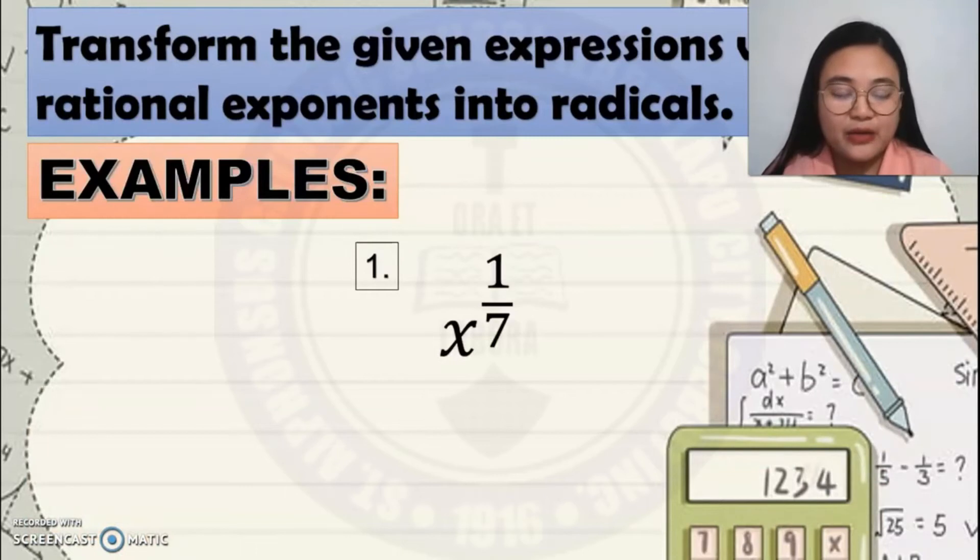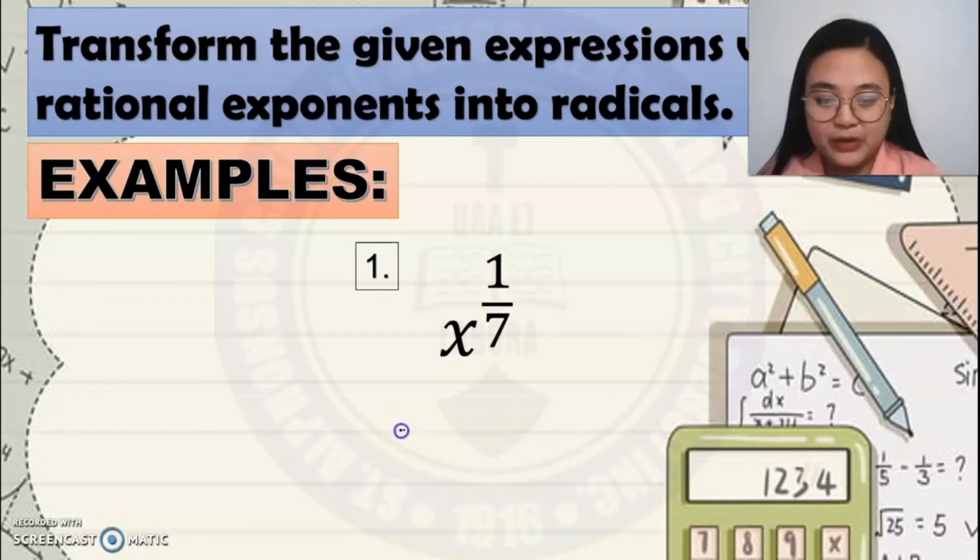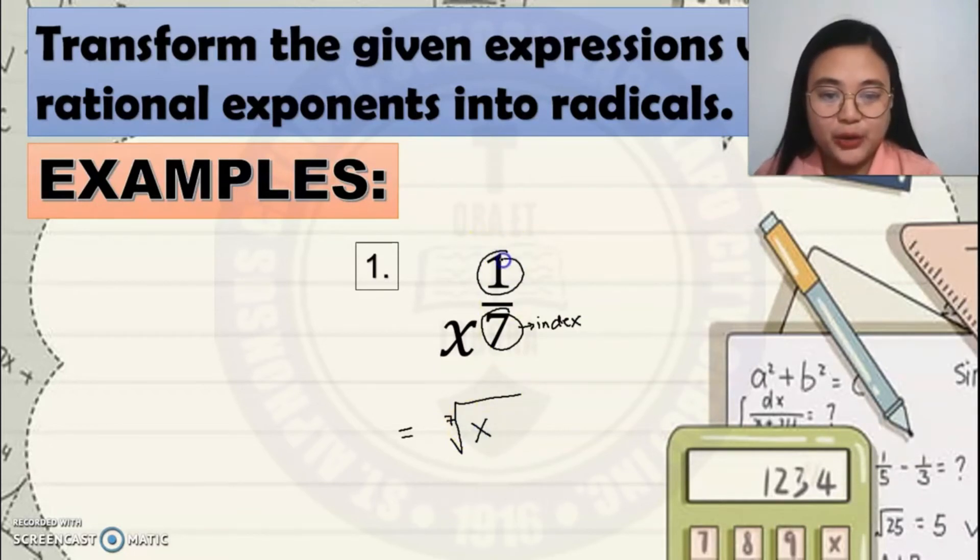For example, X raised to 1 over 7. What are you going to do? The denominator will become the index of the radical, found outside the radical sign, and put the base as the base of the radicand. The numerator will become the exponent of the base, and since the exponent is 1 here, you don't need to write 1 anymore. So it becomes 7 root of X. Box your final answer.